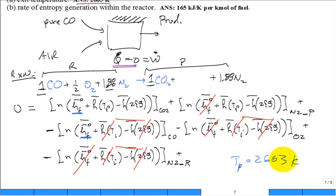So does that look good? That's how we did it. Now for part B, which is the rate of entropy generation within the reactor, what we have to do is write the second law, and that forces us to evaluate the absolute entropy.